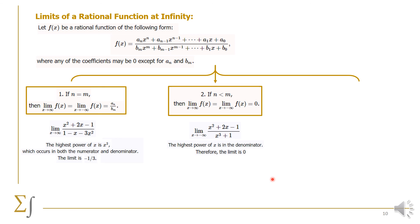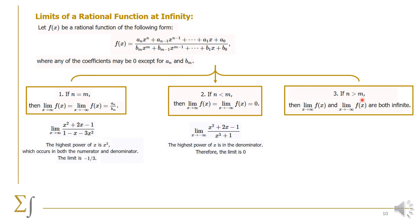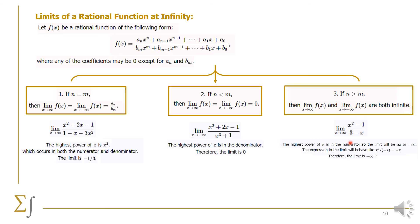Case 3: if the degree of the numerator is greater than that of the denominator, the limit as x goes to plus or minus infinity equals infinity in magnitude. For example, (x² − 1) / (3 − x) as x goes to infinity. We must determine the sign algebraically by dividing the leading coefficients: positive x² divided by minus x gives minus x, which is negative. So the limit equals minus infinity.